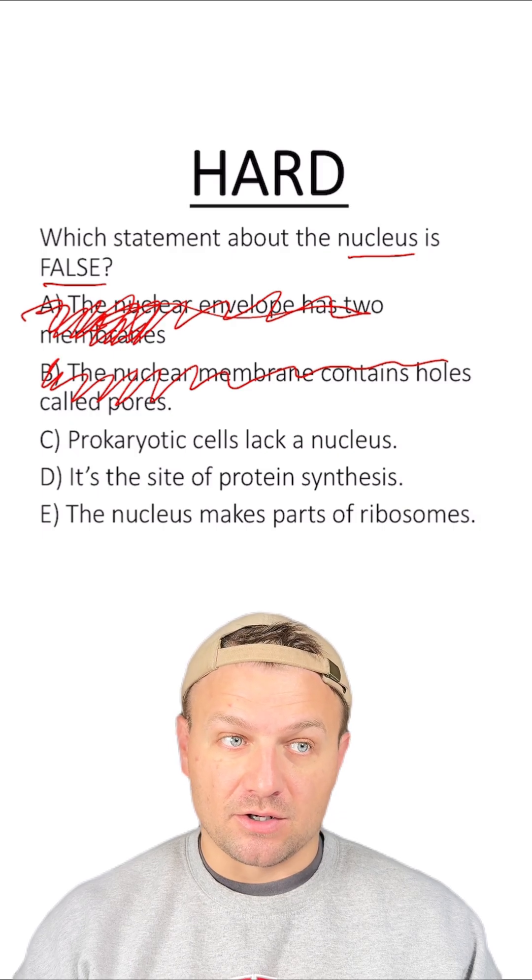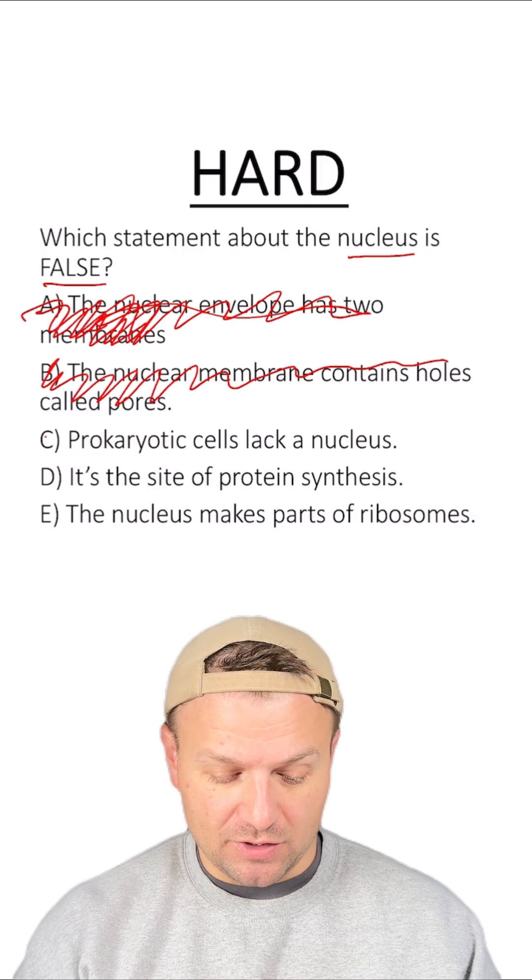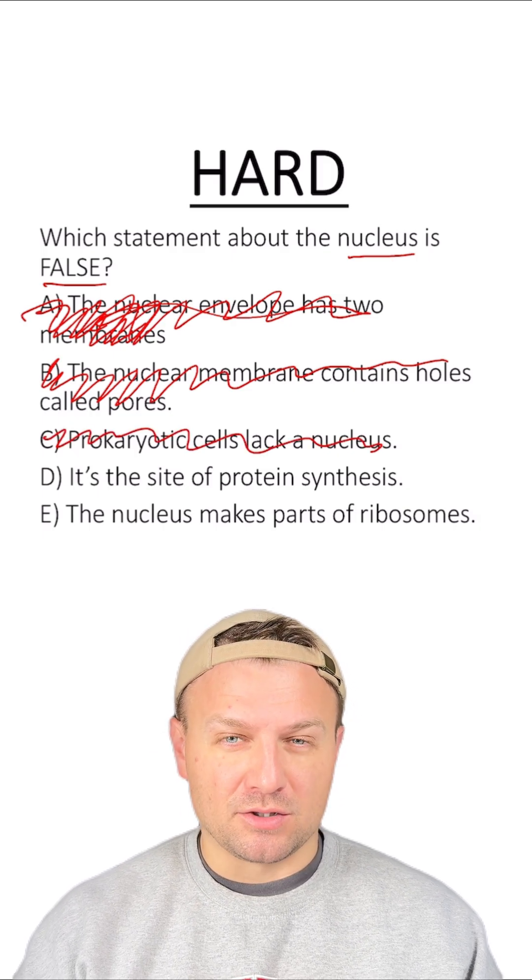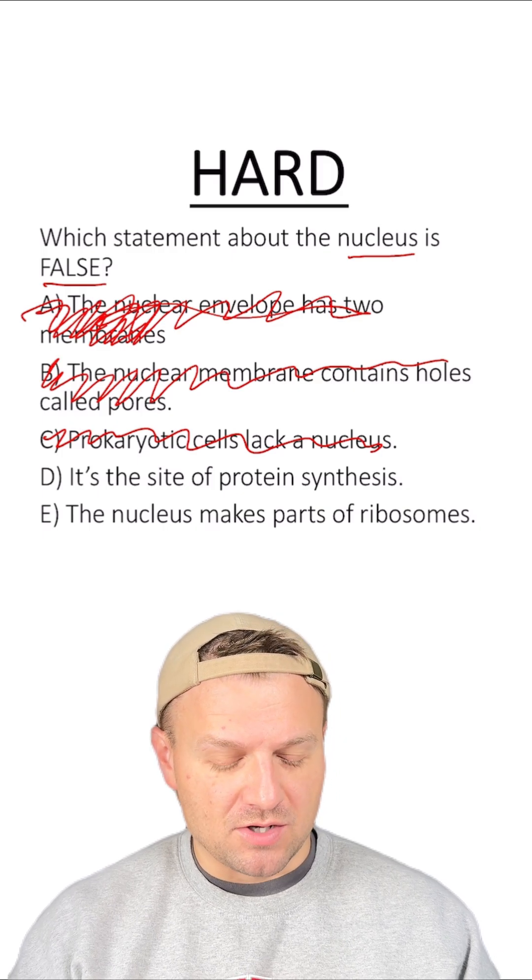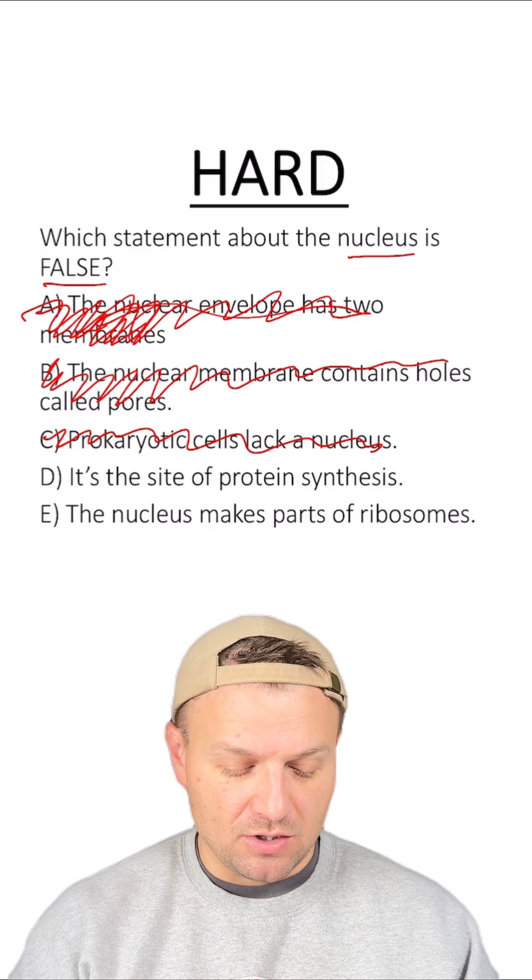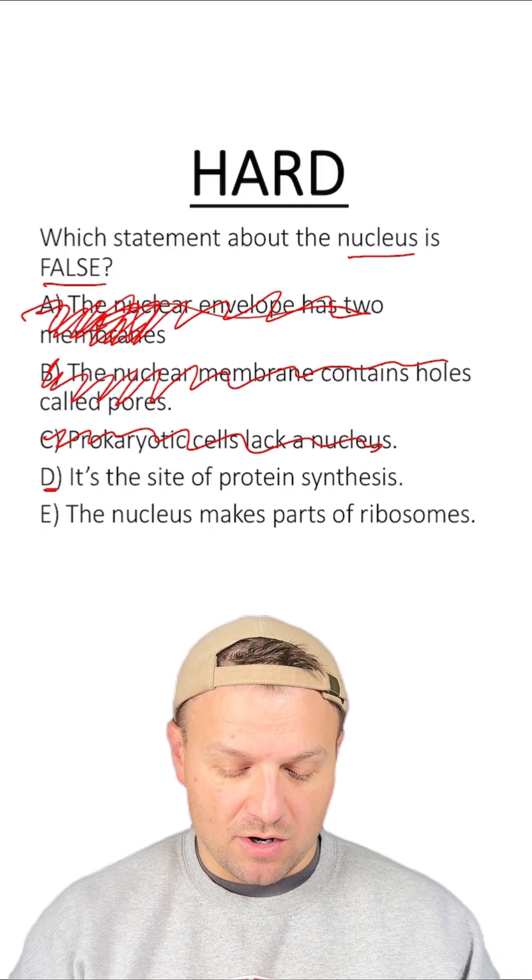Option C: prokaryotic cells lack a nucleus. That's correct. They don't have a nucleus. Option D: it's the site of protein synthesis. No, that's the ribosome and we don't have functioning ribosomes in the nucleus. So D looks like our answer.